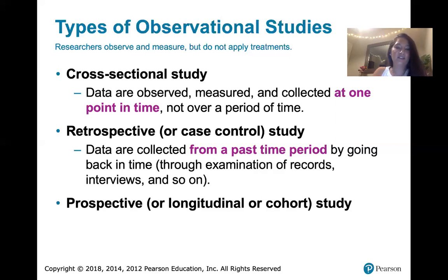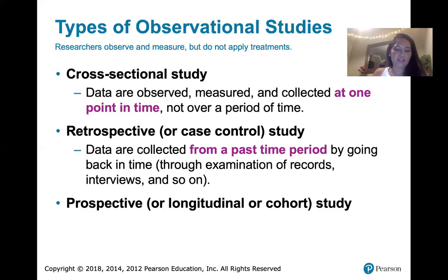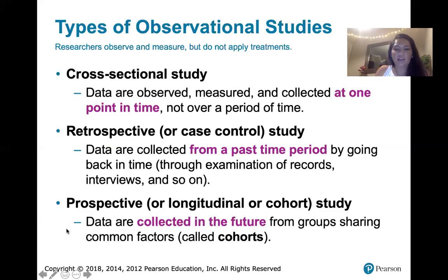Lastly, we've got prospective studies, also called longitudinal studies or cohort studies. If cross-sectional studies are about one point in time and retrospective studies are about data collected from the past, prospective studies are about data collected from the future. Basically, we select a group of subjects, then we see how those experimental units evolve over time, often put into cohorts. Data are collected in the future from groups sharing common factors — those groups are called cohorts.